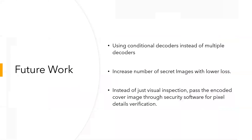Coming to the future work, we can also use conditional decoders instead of multiple decoders. We plan to increase the number of secret images we can hide into the container image, keeping the loss as low as possible. Also, here we have used visual inspection as a primary metric. We aim to make our model more robust so that even security software would not be able to detect it.